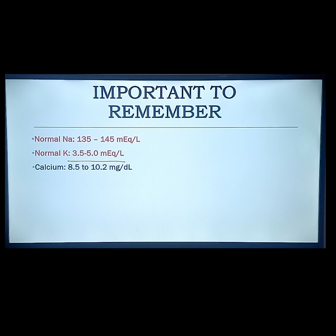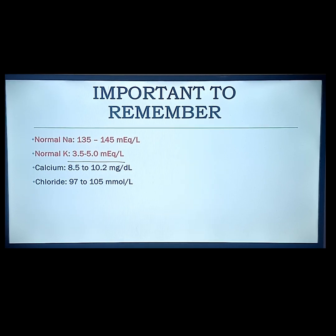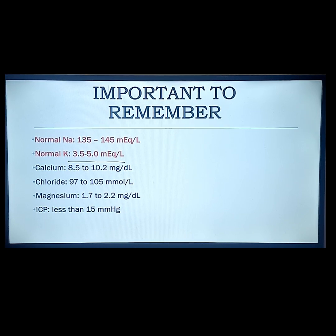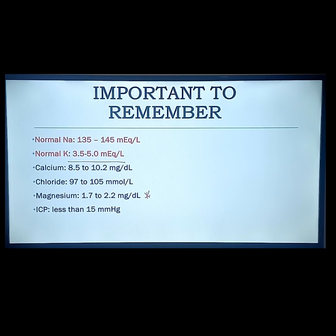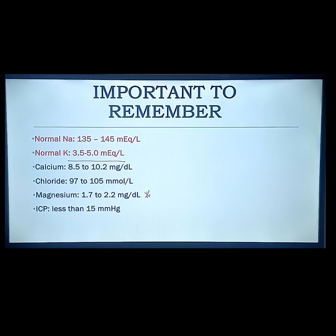Other important values to remember: calcium is about 8.5 to 10.2 mg per deciliter; chloride is 97 to 100 milliosmol per liter; and magnesium is around 1.5 to 2.2 mg per deciliter. This is very important especially when giving magnesium sulfate to patients with pregnancy-induced hypertension to prevent seizure. High magnesium levels cause toxicity, manifested by absence of patellar reflex or deep tendon reflex. The antidote is calcium, since magnesium and calcium are opposites.